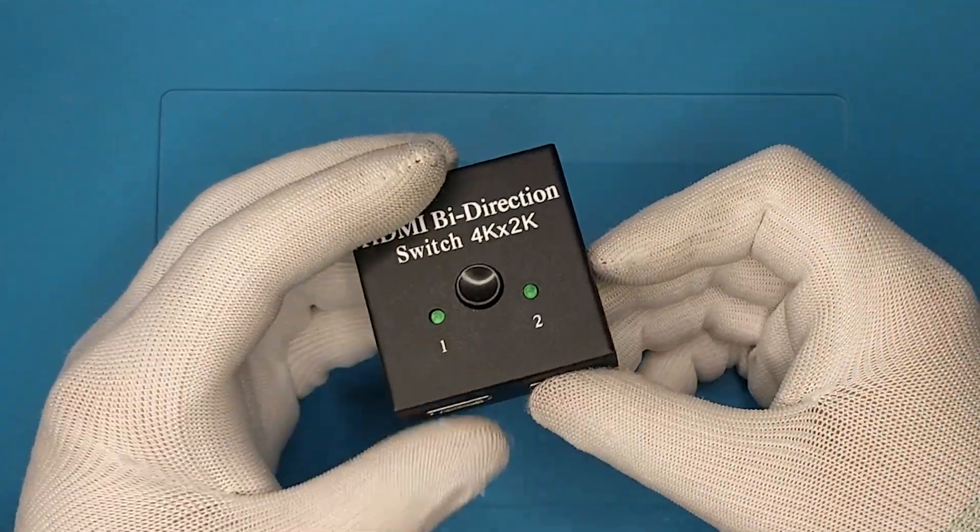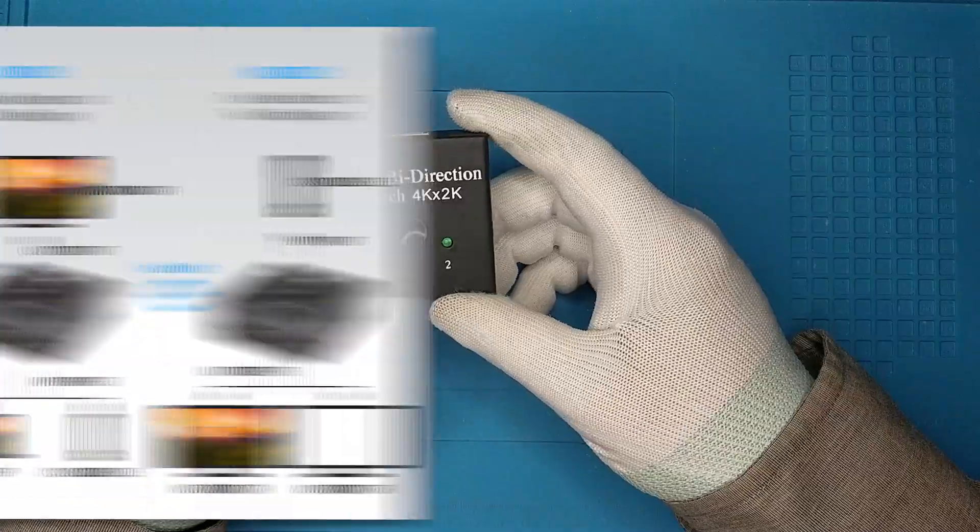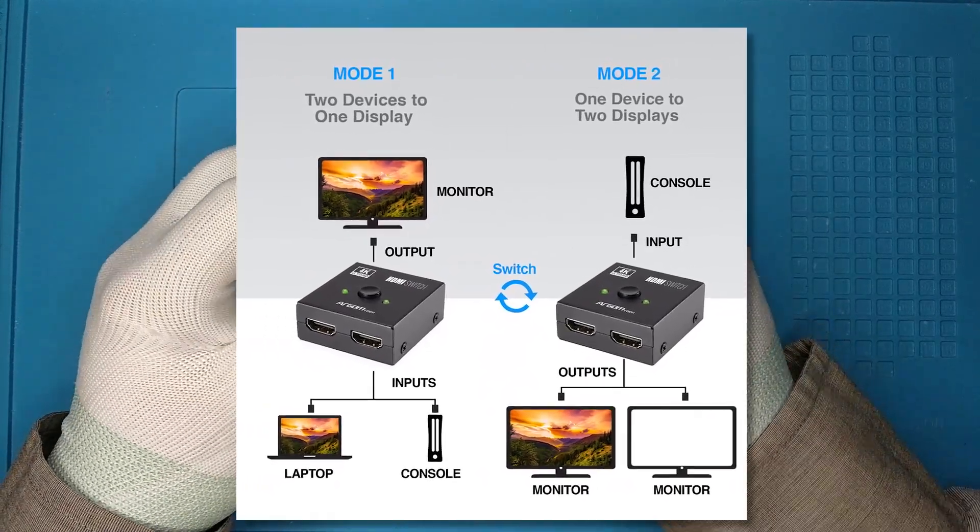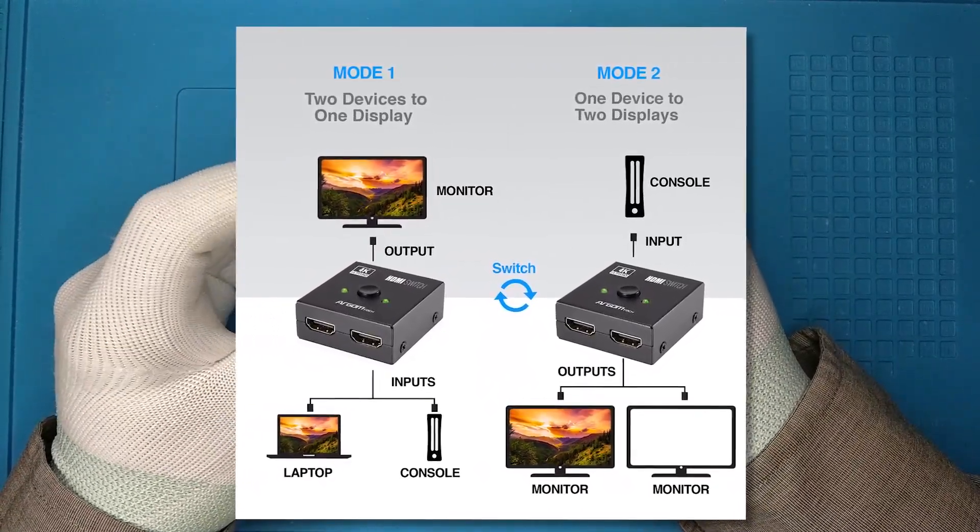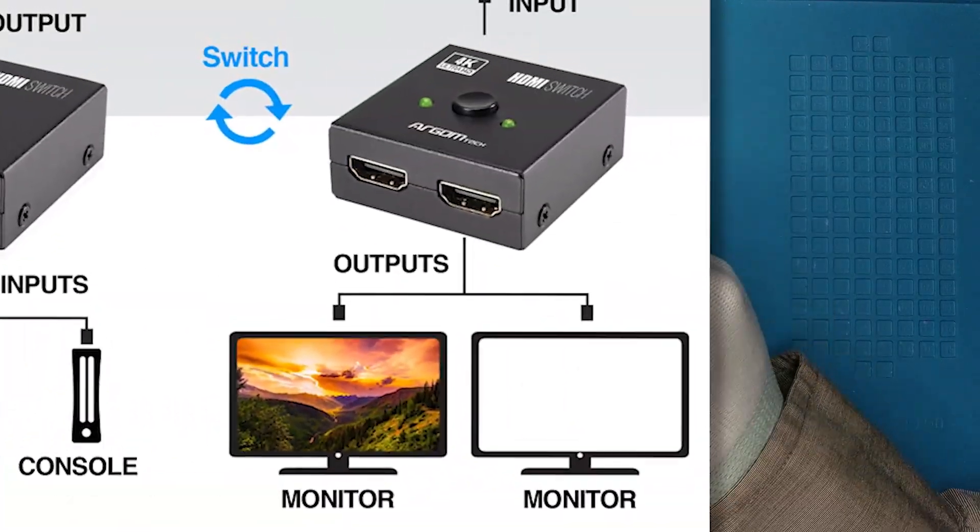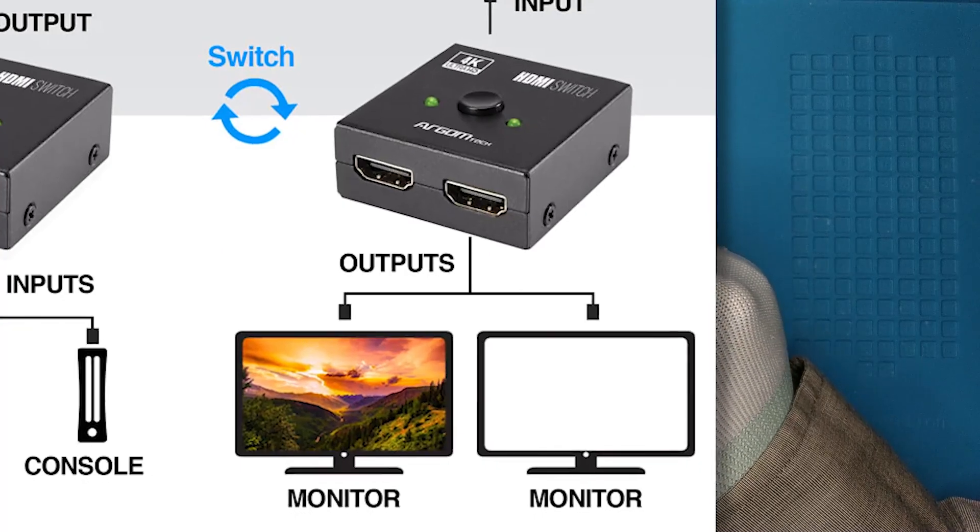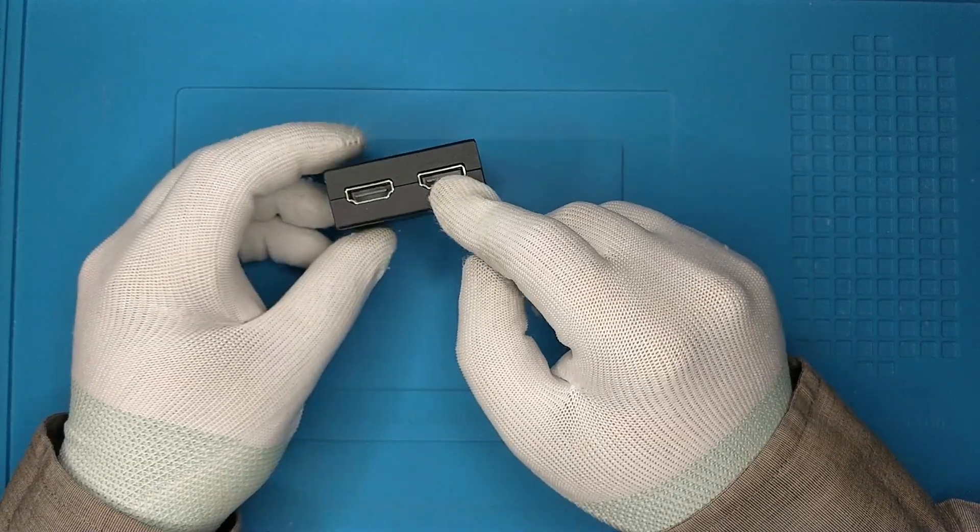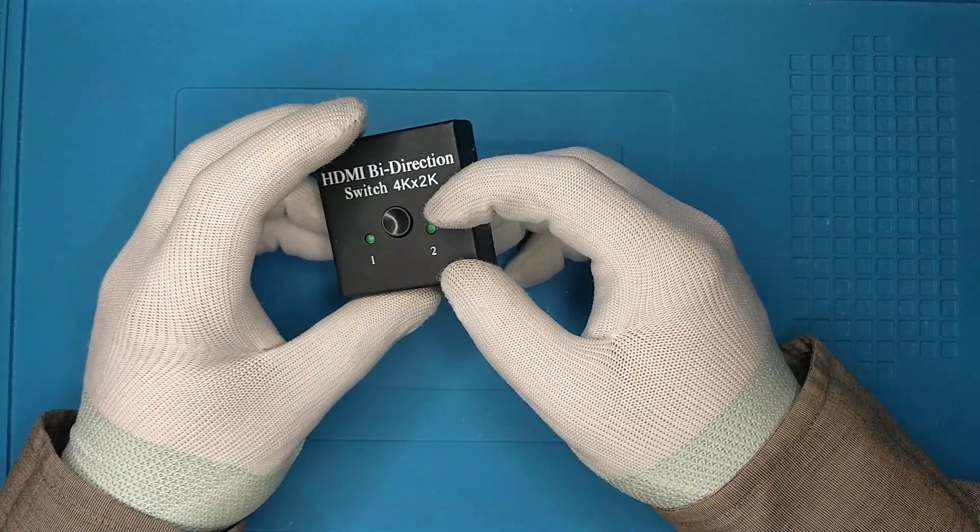Here we have an HDMI bi-directional switch. One side can be linked to your monitor while the other lets you plug in a couple of devices, maybe two computers or your favorite gaming consoles. Alternatively, you could use a single computer and alternate between a TV and a monitor. It's more versatile than you'd think and they aren't that expensive.